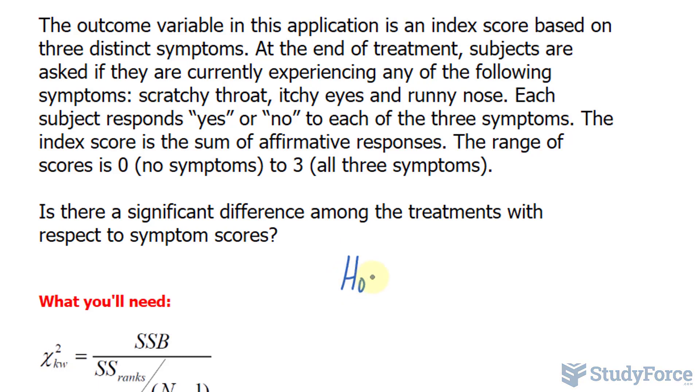As always, the first thing that we have to do is write down our hypothesis. And just like the ANOVA test, the null hypothesis will be that all of the means are equal. Whereas the alternative is that at least two means differ. And in this case, mu represents the mean rank for each of the treatments.